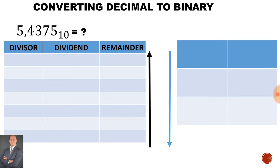Now we have two tables. The first table we'll be dealing with is the whole number 5. We have three columns: the divisor, the dividend, and the remainder. When we read the remainder, we read from the bottom of the column going up.